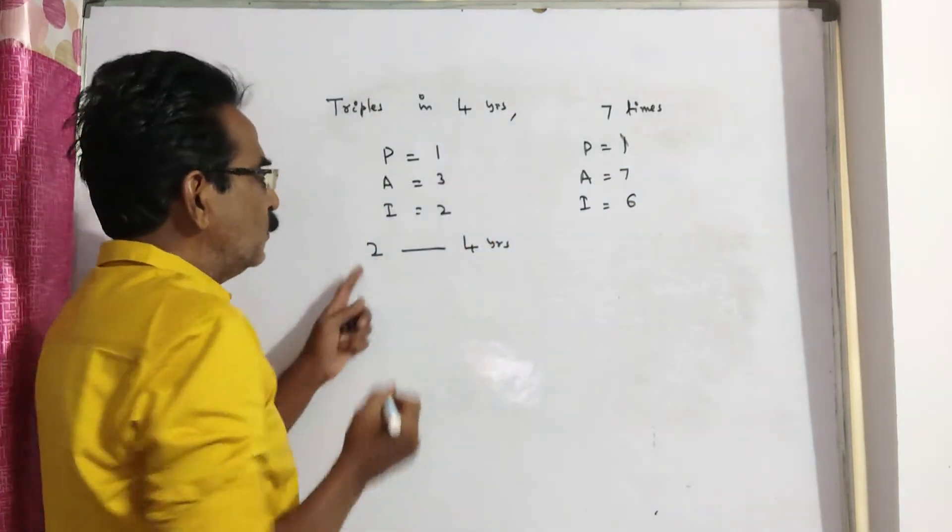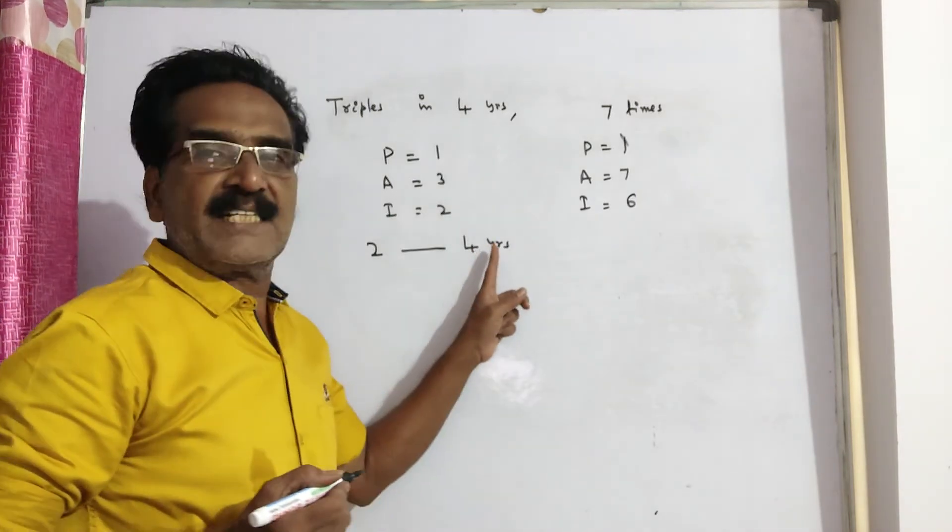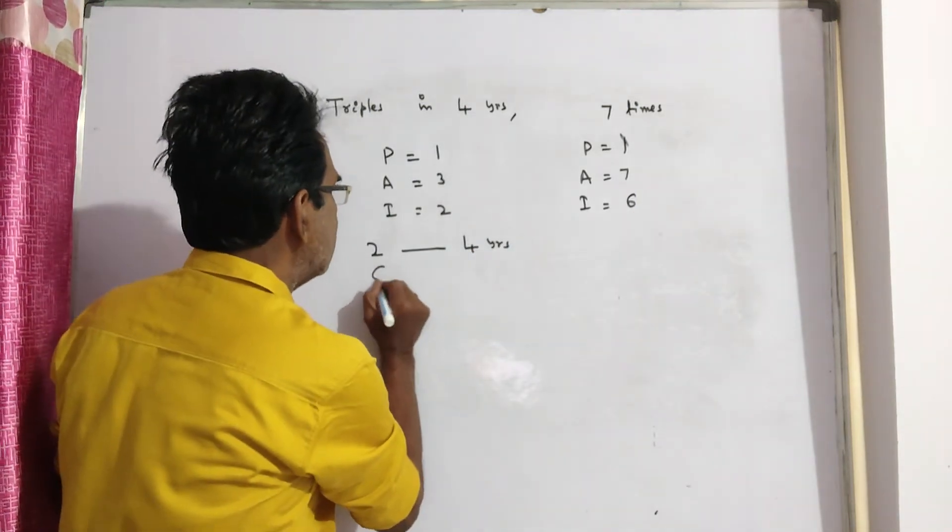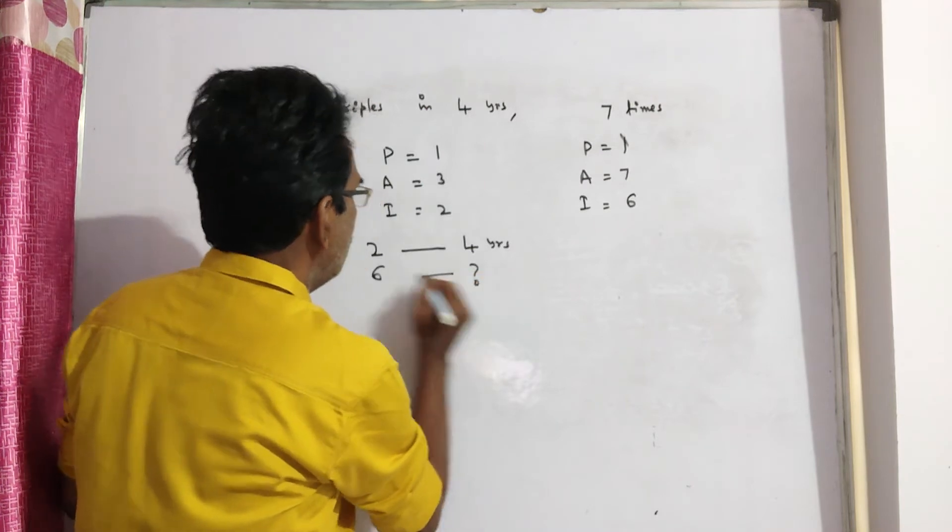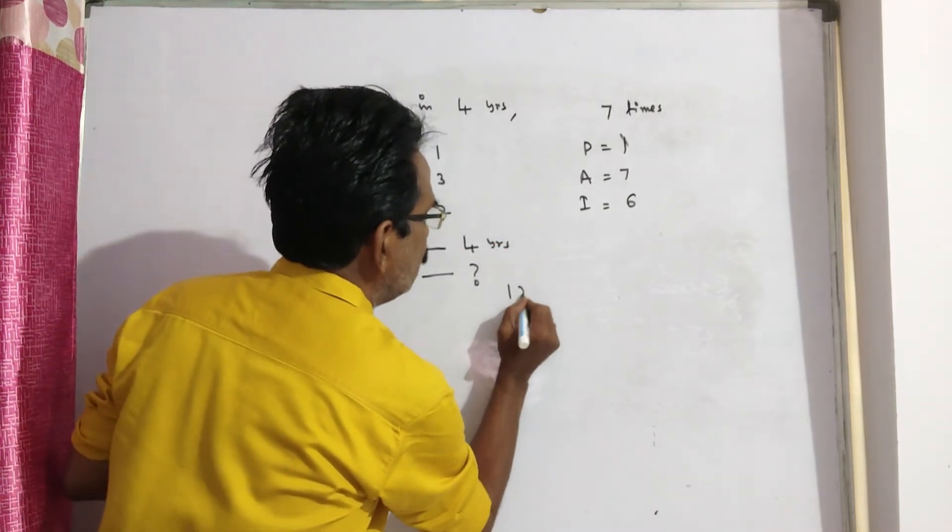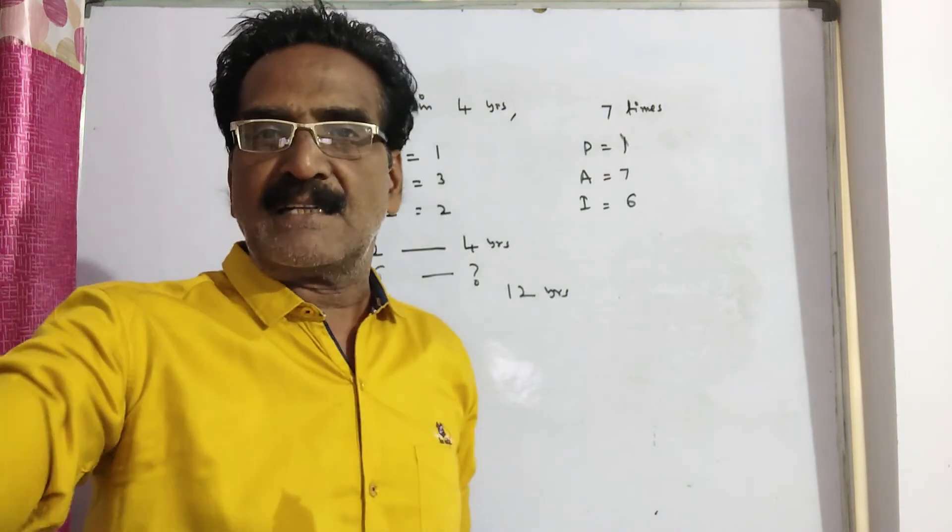So for getting 2 rupees interest, it requires 4 years. For getting 6 rupees interest, it requires 3 times 4, so 12 years friends. 12 years is your answer.